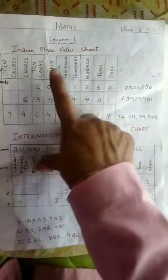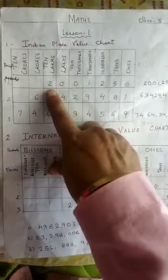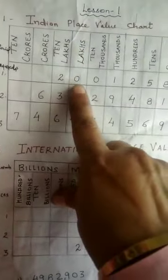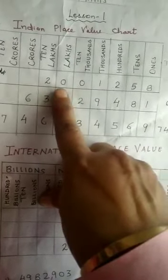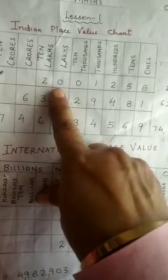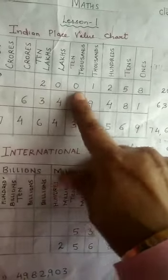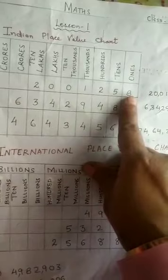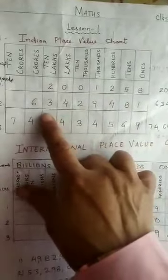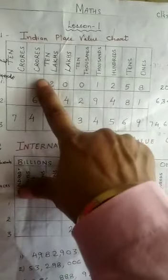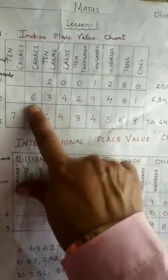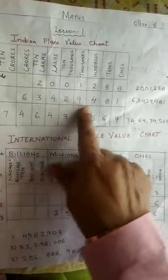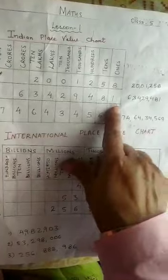In the first example, 2 and 0 are both under the lakh period, so this number is read as twenty lakh, one thousand, two hundred and fifty eight. In the second example, 6 is under crore, so it is read as six crore, thirty four lakh, twenty nine thousand, four hundred and eighty one.